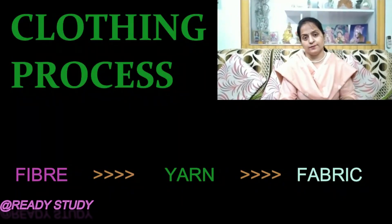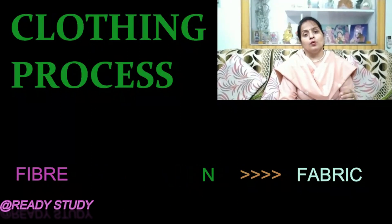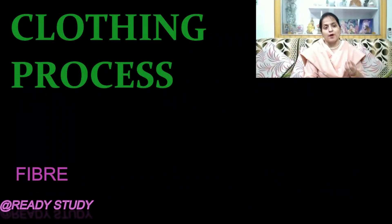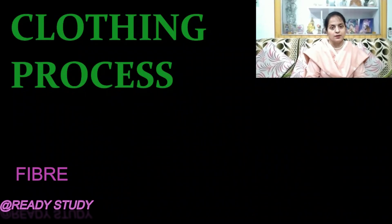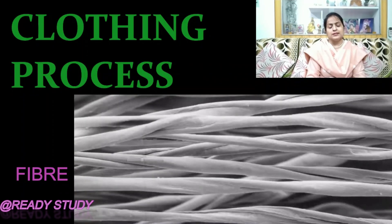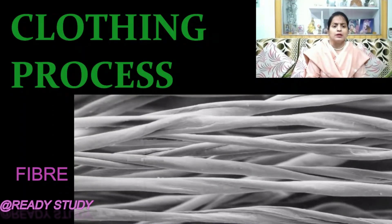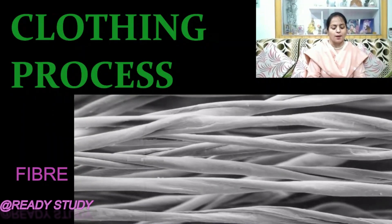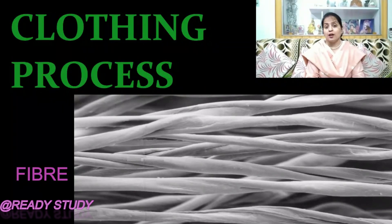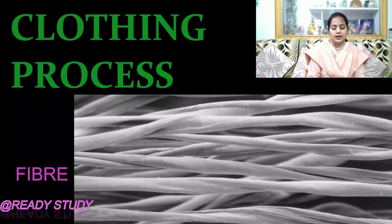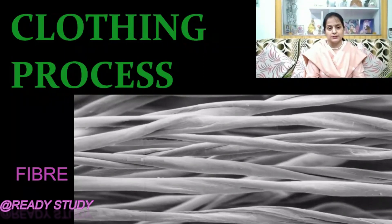How do we get clothes? All clothes are made up of fibers. From the fiber we get yarn, and from the yarn we get fabric, and from the fabric we make clothes for ourselves. First, you should know the definitions of fiber, yarn and fabric. A fiber is an extremely thin, elongated strand of a material.